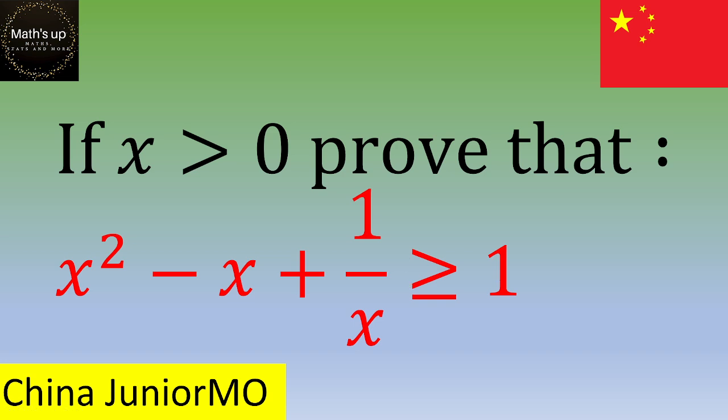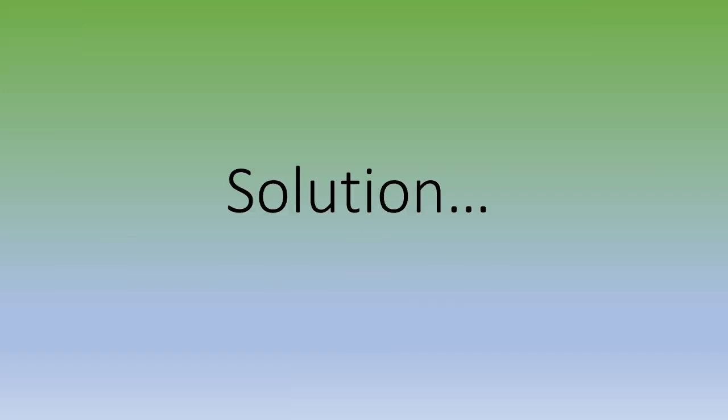If you want to give it a try, please pause the video. Otherwise, let's see the solution. One way to solve this exercise is to begin with the first term x squared. The idea is to write down the remarkable identity and transform some terms into a perfect square.